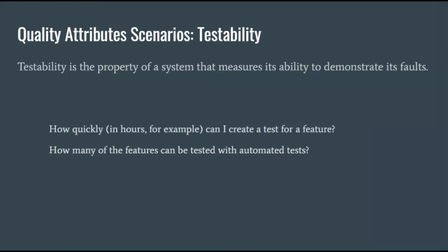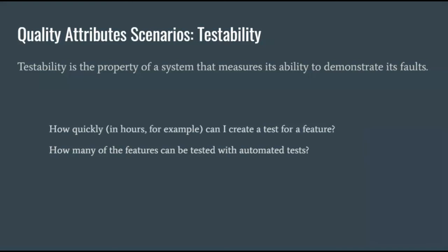Testability is a measure of how easy it is to test the features in the system — like how quickly or easily can a feature be tested. An example: if an engineering staff decides to create a test for a new functionality in the Red Lion, after the feature is completed, the test can be created in four hours.